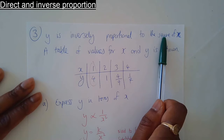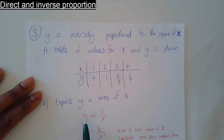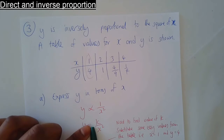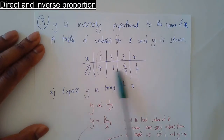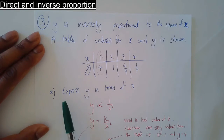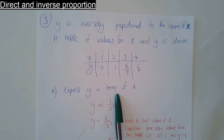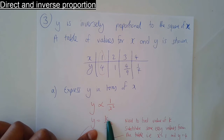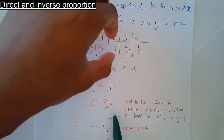y is inversely proportional to the square of x, and converting to an equation with an equal symbol gives y equals k over x squared — k goes on top because it's inversely proportional. Here's a table of values of x and y. The question asks you to express y in terms of x, which just means find the formula. We need to work out the value of k.